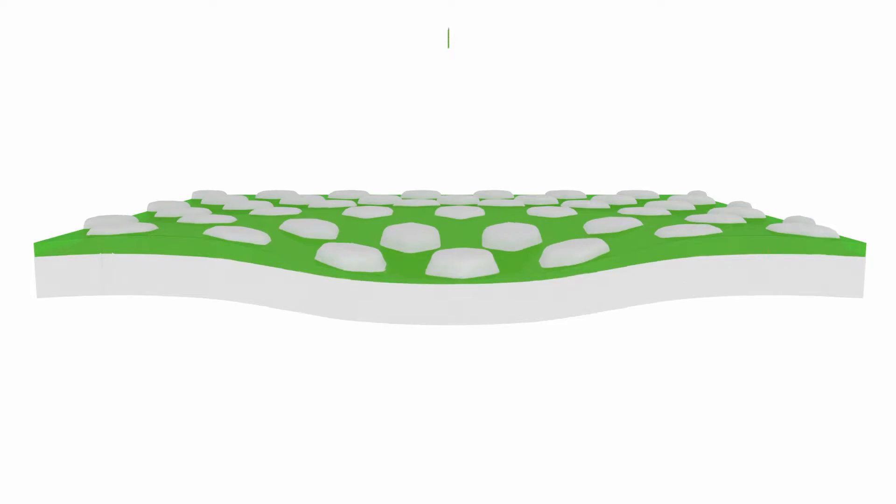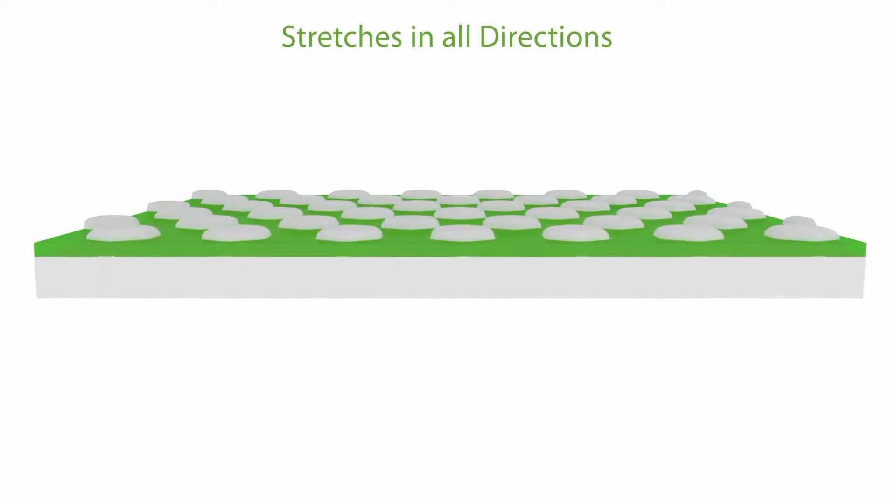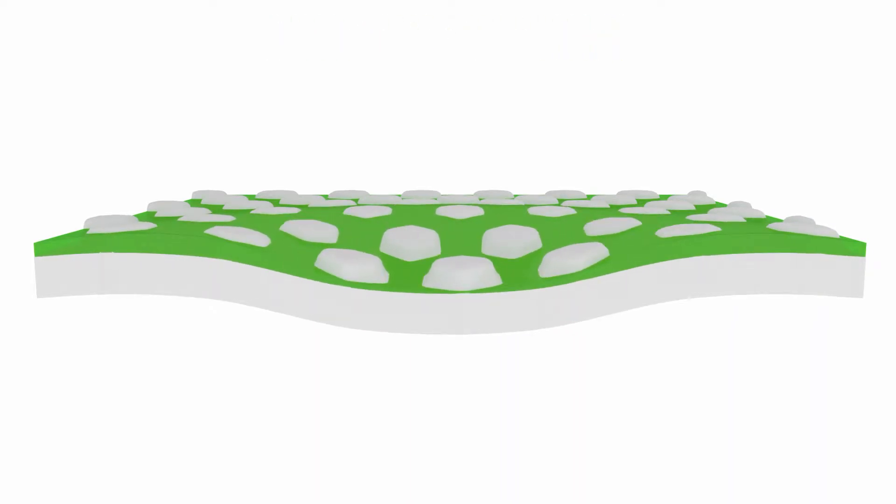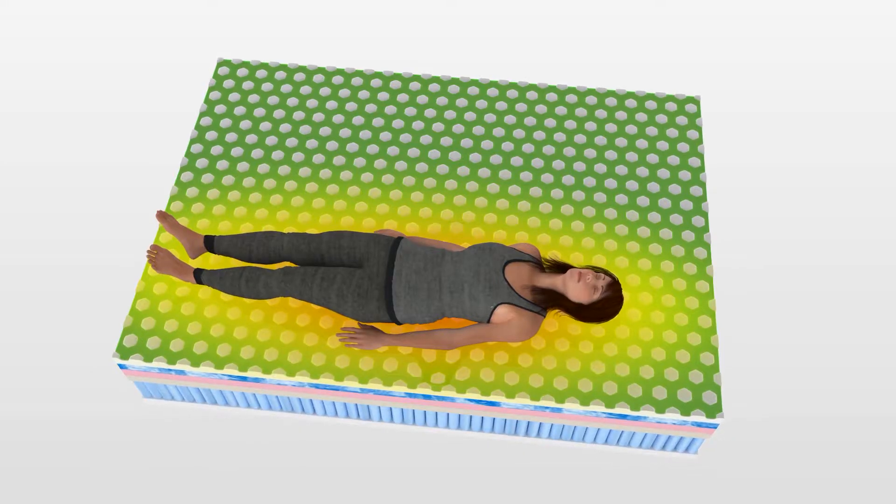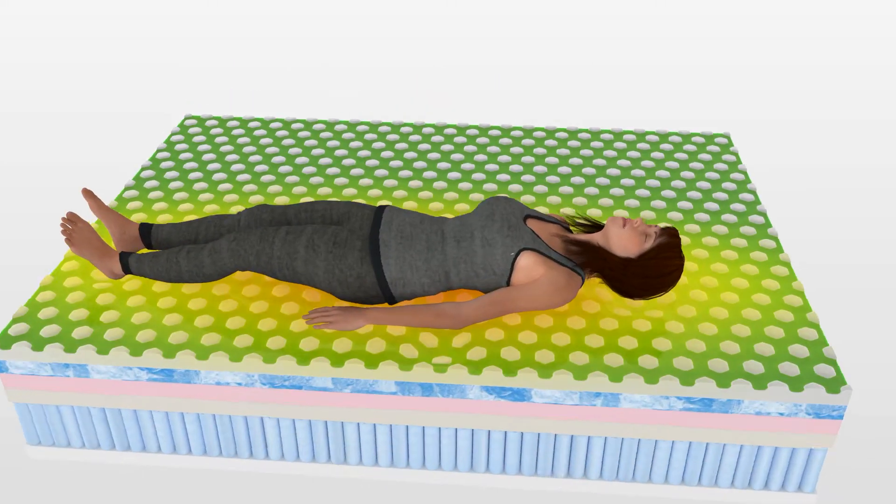The unique 3D Matrix layer stretches in all directions. It conforms to the body without sinking, providing optimum body support and proper spinal alignment.